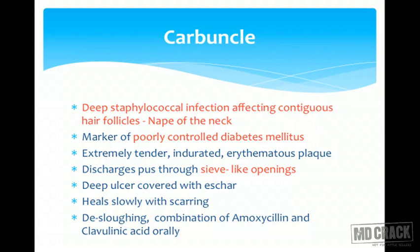A carbuncle is a deep staphylococcal infection affecting contiguous hair follicles. The very classical site is the nape of the neck. Importantly, carbuncle is a marker of poorly controlled diabetes mellitus — so we must always check blood sugar levels. It presents as an extremely tender, indurated erythematous plaque covered with necrotic tissue, with pus discharging through multiple sieve-like openings — very characteristic. A deep ulcer is later covered with eschar and heals slowly with scarring. Treatment includes escharectomy or de-sloughing, higher antibiotics like amoxicillin-clavulanic acid orally, and treatment of the underlying diabetes.